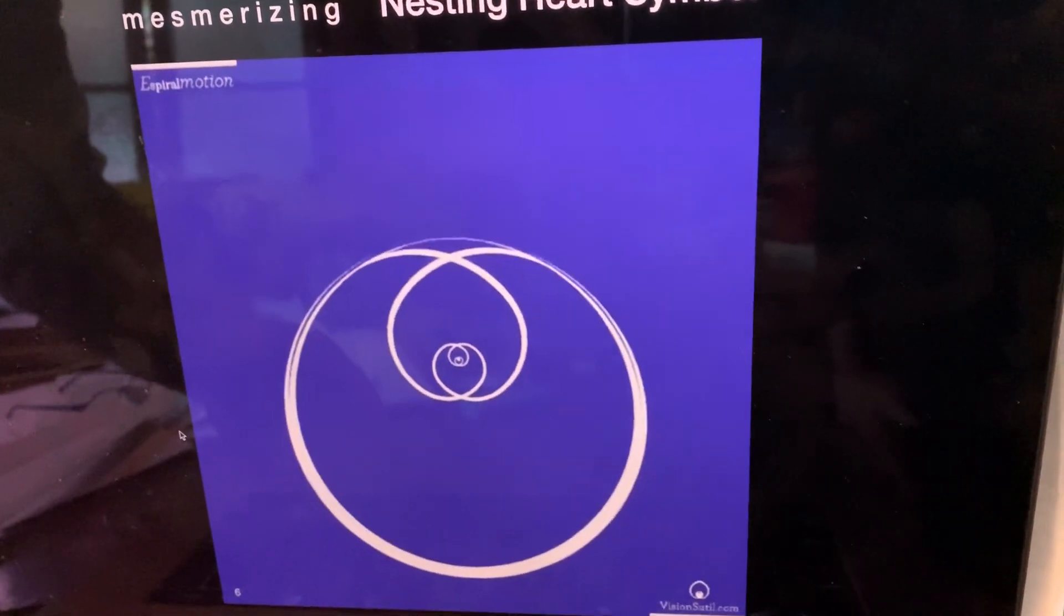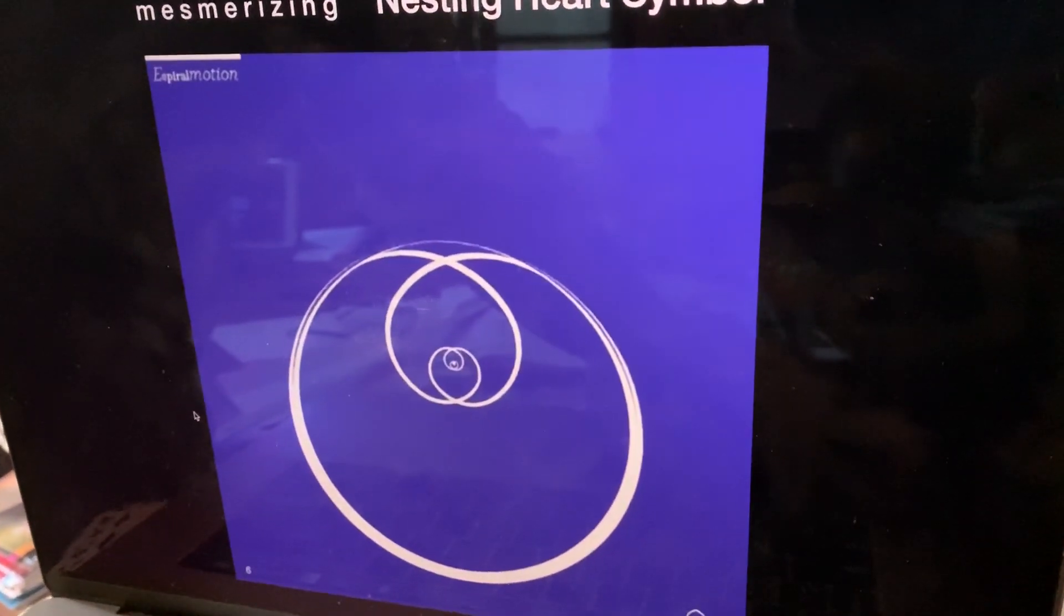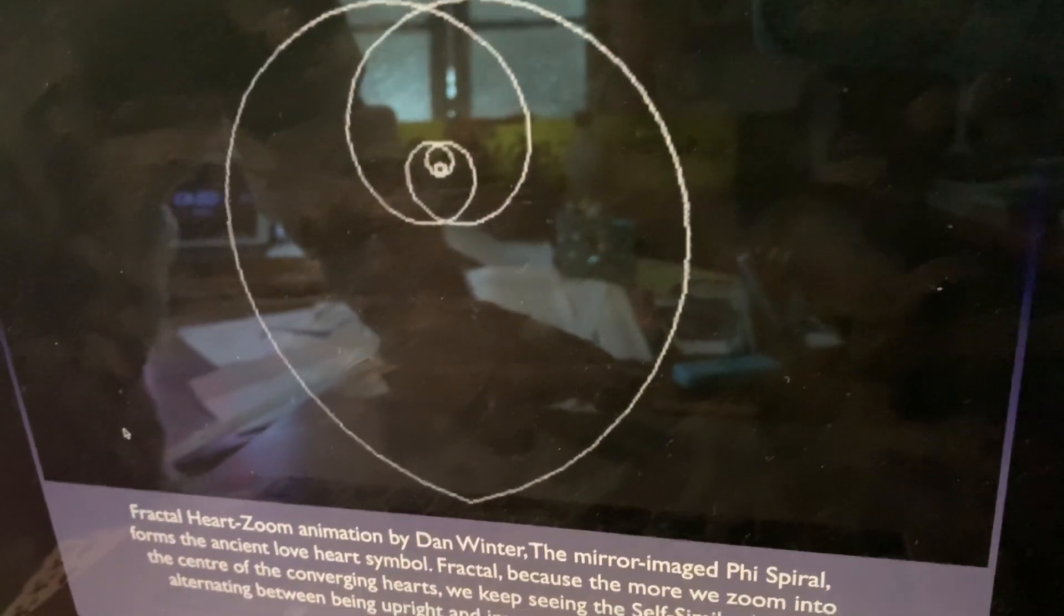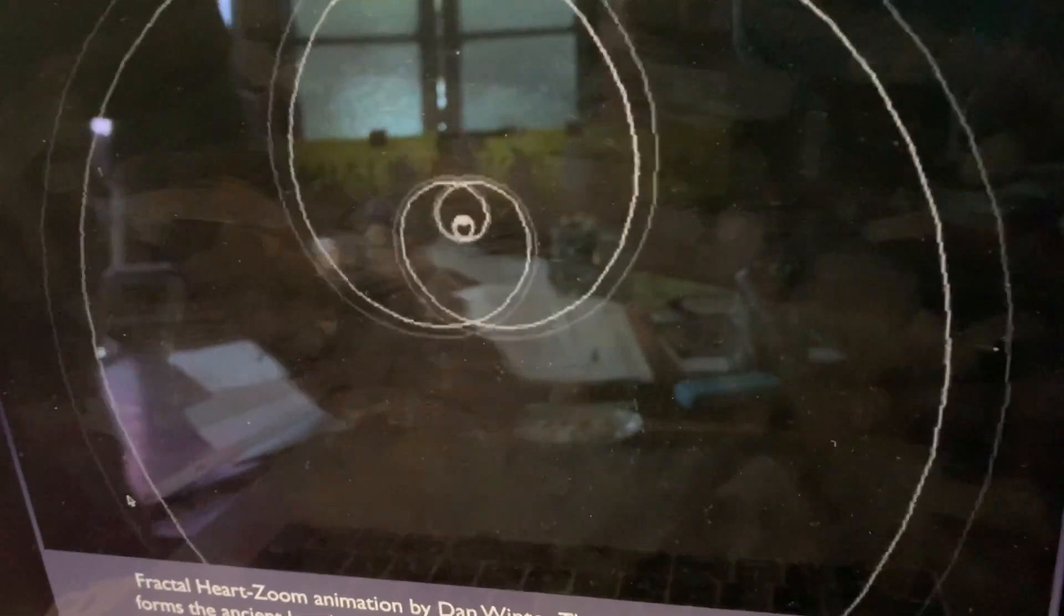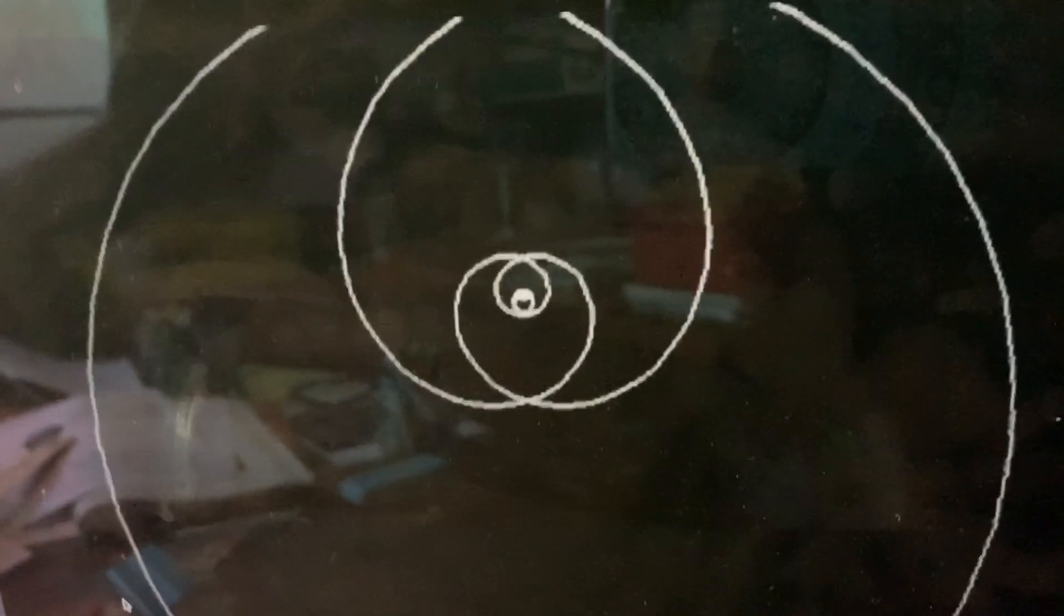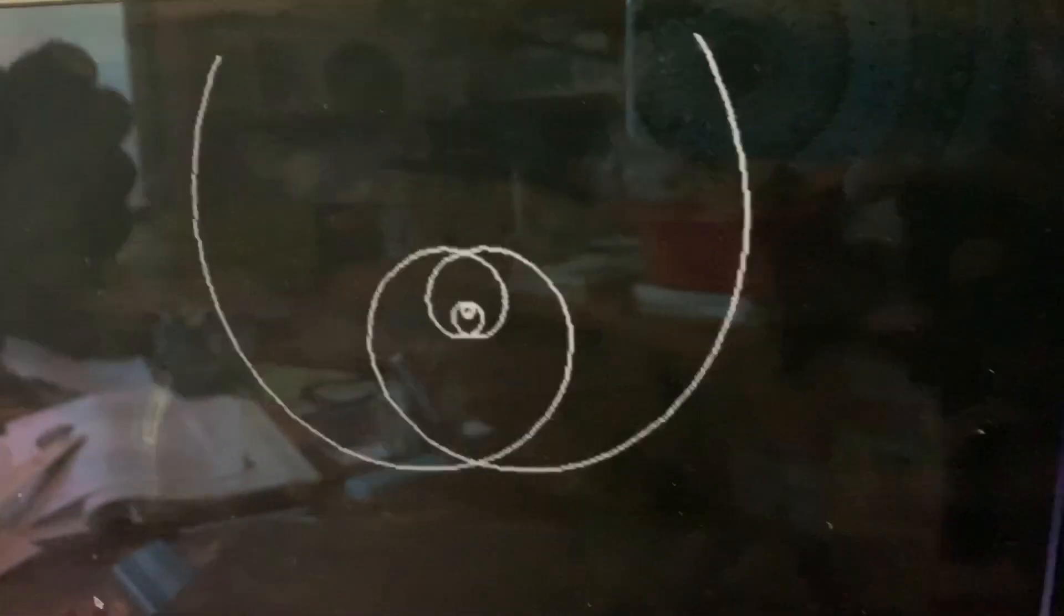This one's a modern version of the one that was done originally by Dan Winter, which is called the heart zoom fractal. This was the first time it was actually put together. As you zoom in into the center, you'll always see the heart within the heart within the heart.